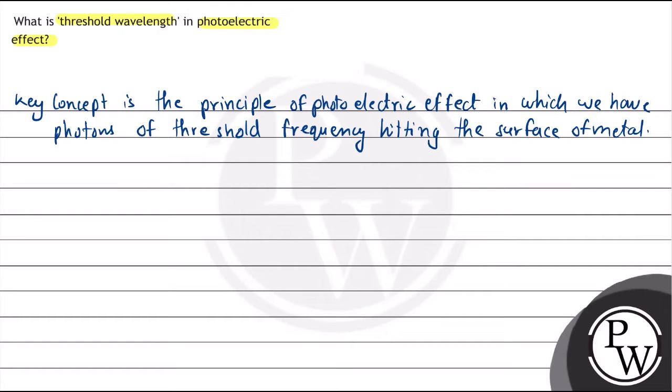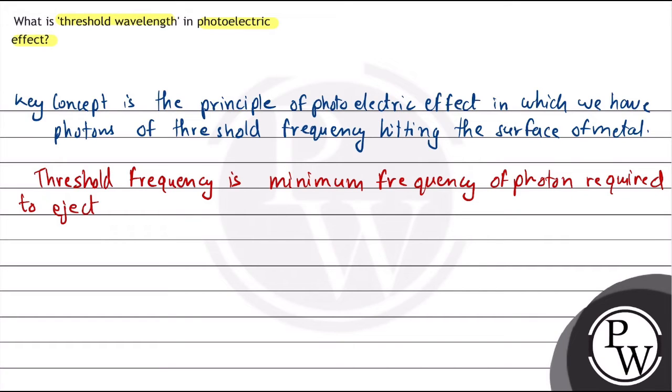So threshold frequency is the minimum frequency of photon required to eject an electron out of the metal surface. Threshold frequency is the minimum frequency which we need to eject out the electron of the metal surface.